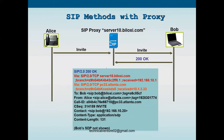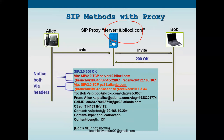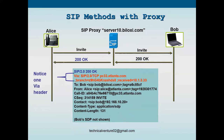After the INVITE exchange (100 Trying and 180 Ringing are also there but not shown here), Bob sends 200 OK containing both Via headers: server10.pyloxy.com and the CUCM server. Once the SIP proxy server receives the 200 OK, it forwards it to Alice. In the next step, the proxy sends 200 OK to Alice with only one Via header — pc33.atlanta.com (the CUCM server IP).